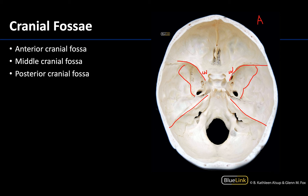The middle cranial fossa will go from the lesser wings of the sphenoid to the apex or the top portion of the petrous parts of the temporal bone. And then the posterior cranial fossa will be between that apex of the petrous part to the back or the squamous portion of the occipital bone. So here is the anterior cranial fossa, this will be the middle cranial fossa, and this will be your posterior cranial fossa, which is your deepest.